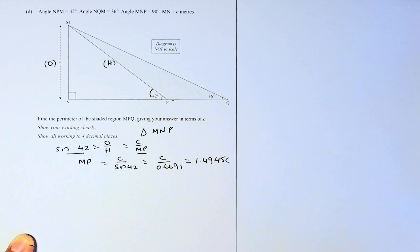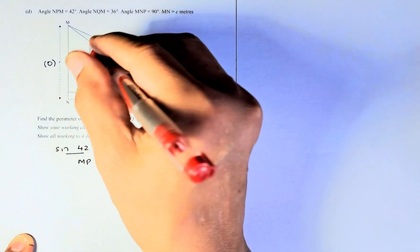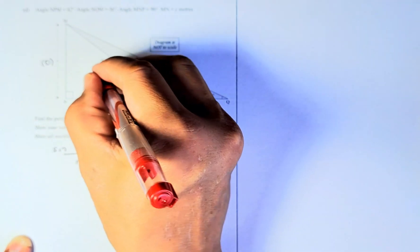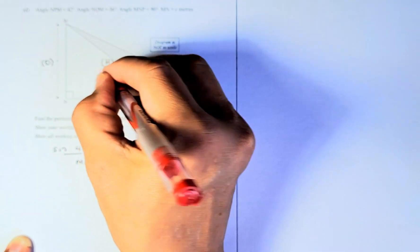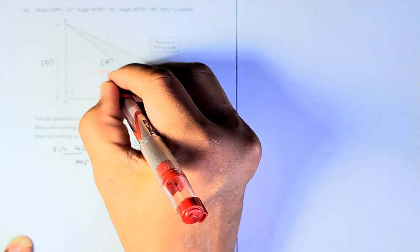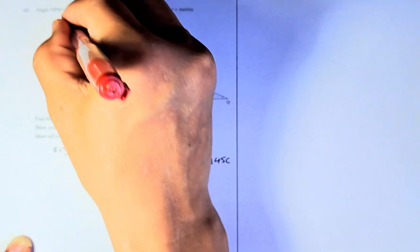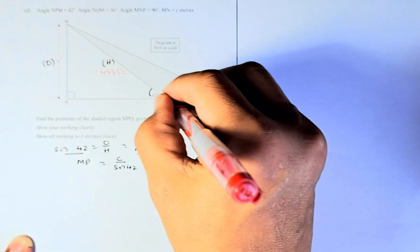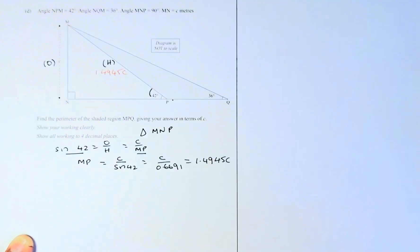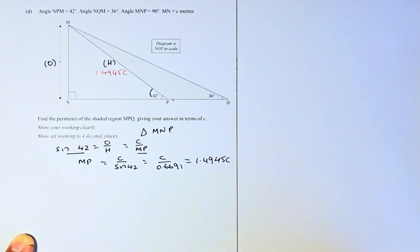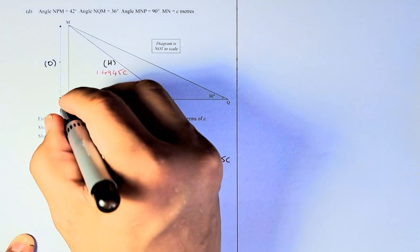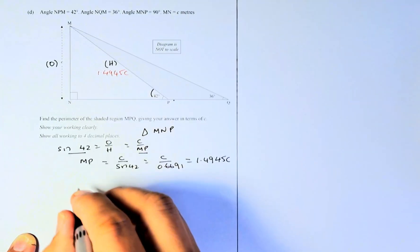So 1.4945C is the first length we find, and we're going to put it here because that's one of the lengths we need to calculate the perimeter. We still need to calculate the other two lengths. Next, we can find the length NP.